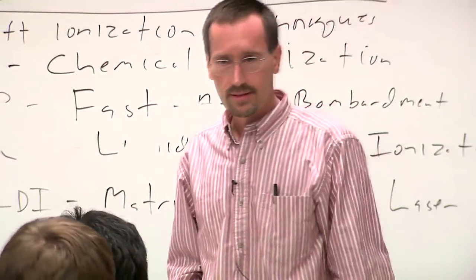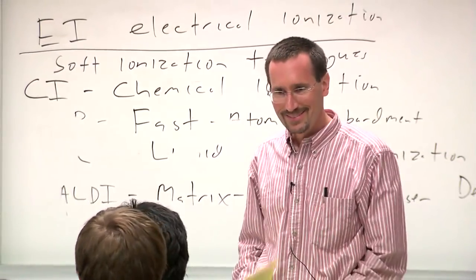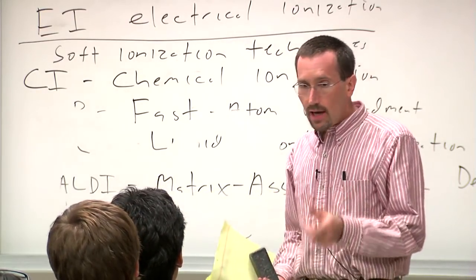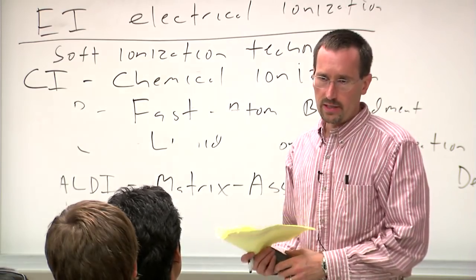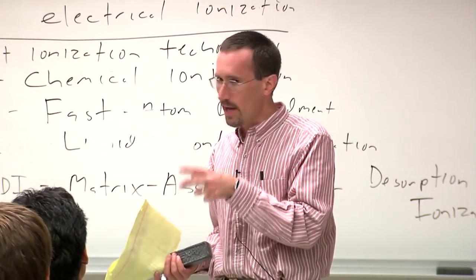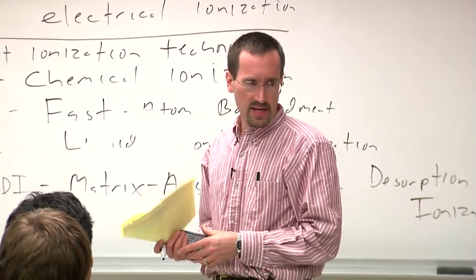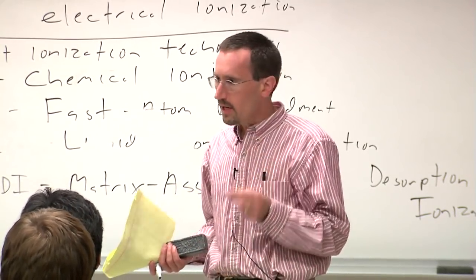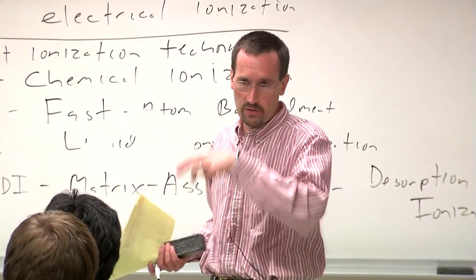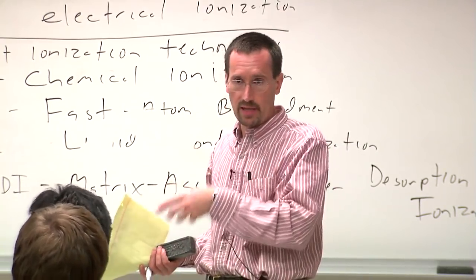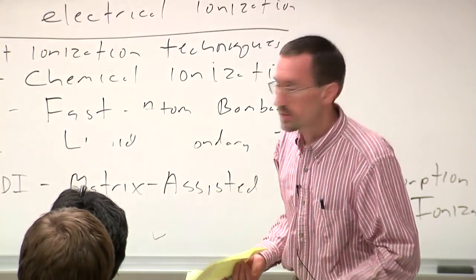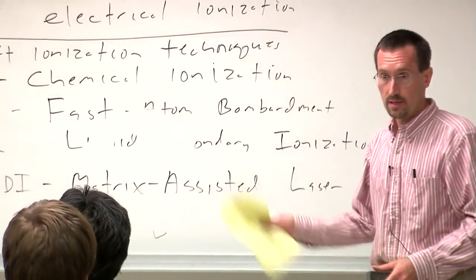A student asks whether you get polymerization of radicals in mass spec. Because mass spectrometry is conducted under conditions where molecules are not typically colliding, you will not see polymerization. In ESI mass spec, because molecules start in solution phase, you may ionize a pair of molecules already stuck together — for example, seeing a molecular ion derived from two molecules with three charges — but typically you do not see polymerization.